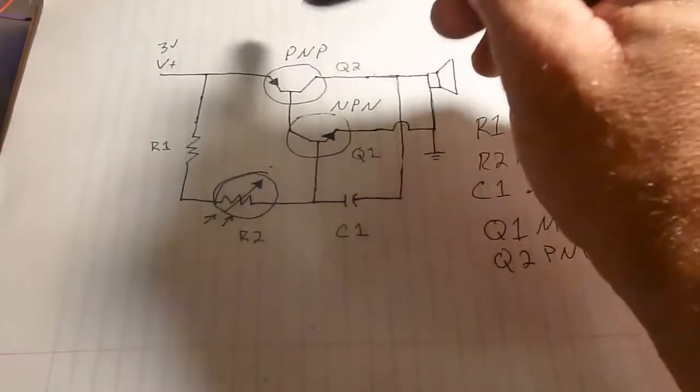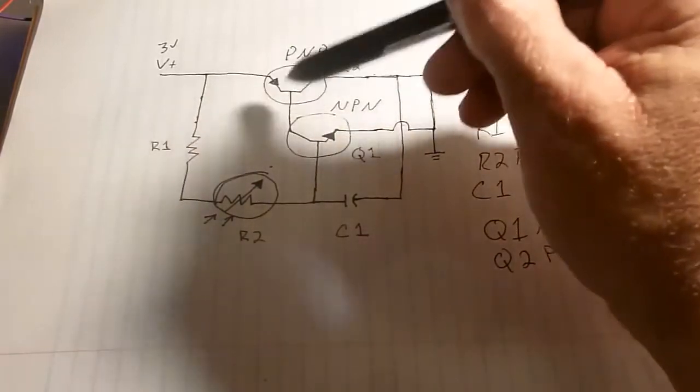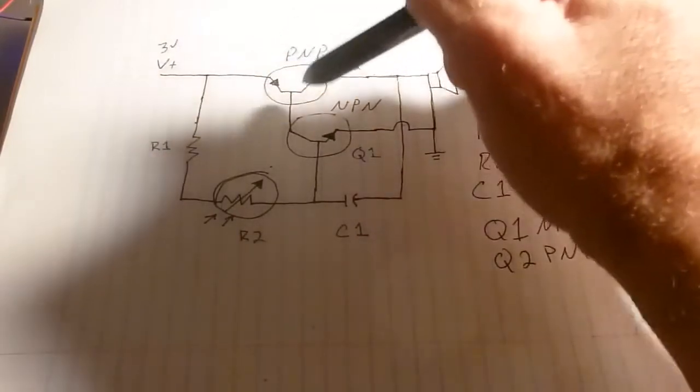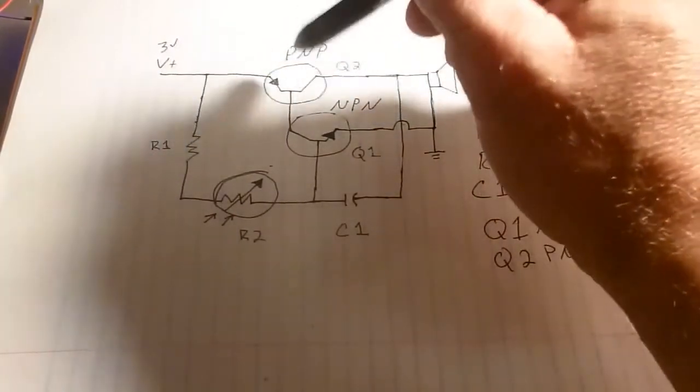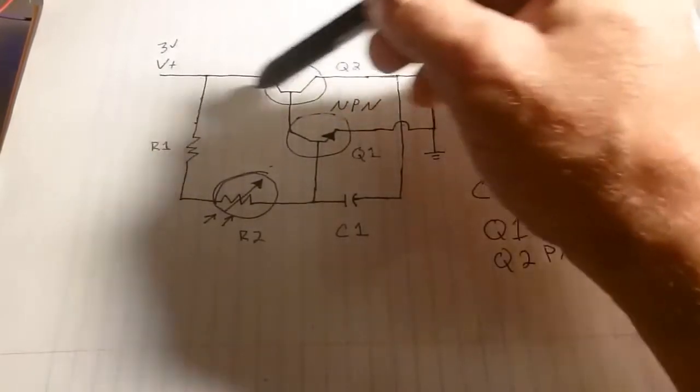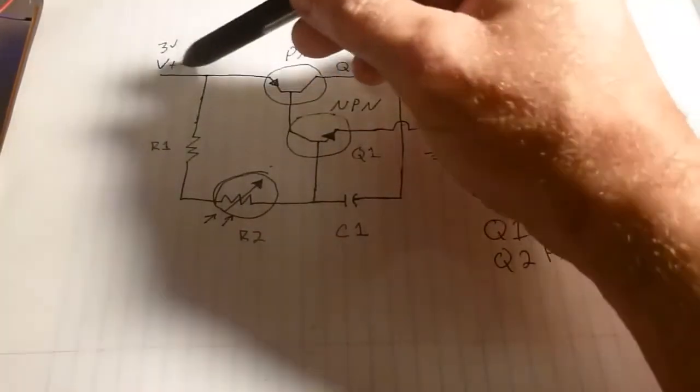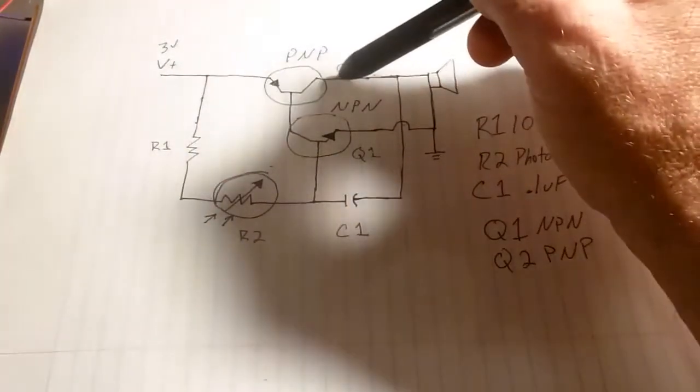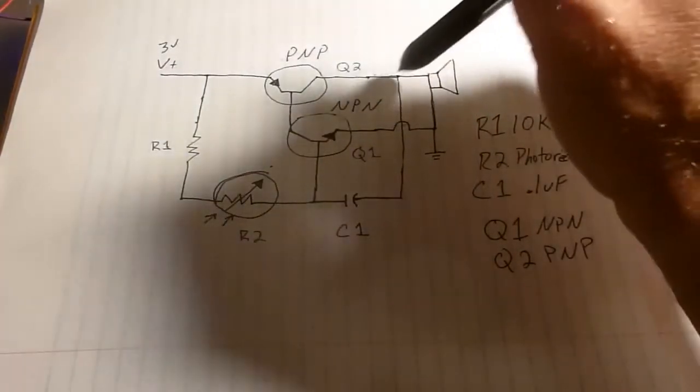As that does, it's going to turn on the NPN right here because you're going to have voltage going to the emitter which is going to be higher than the voltage at the base of the PNP. So what's going to happen is this is going to want current to flow this way, but what it's actually going to do is turn on the PNP transistor.